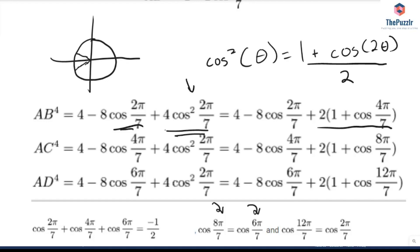And same thing with cosine of 12π over 7, which is equal to the cosine of 2π over 7. Remember, cosine doesn't change sign when you're flipping it over the x-axis. Okay.